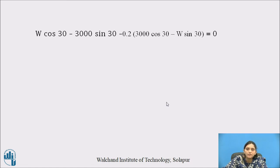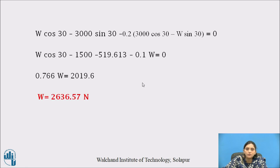In this equation only W is unknown, so find out W. Solving for W, we get W equals 2636.57 N.